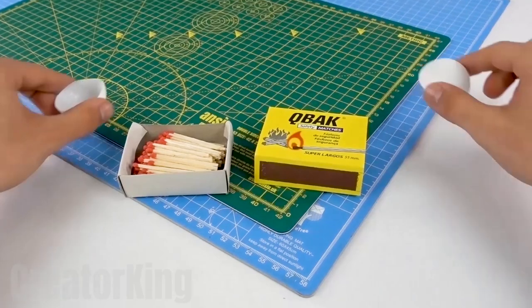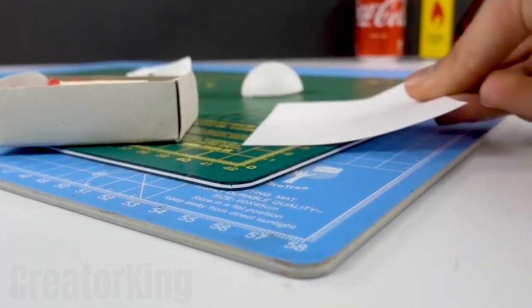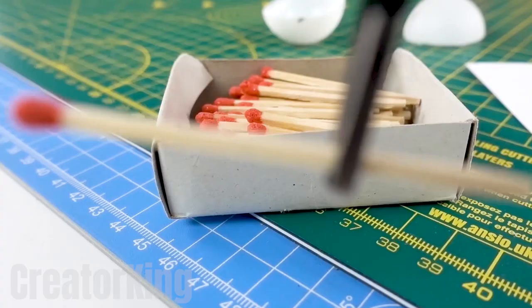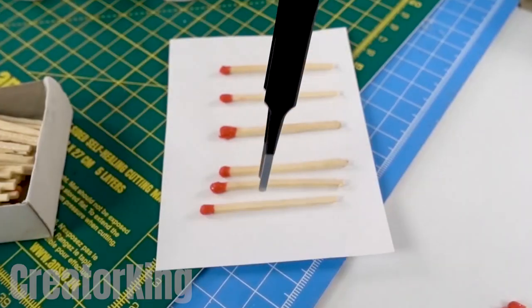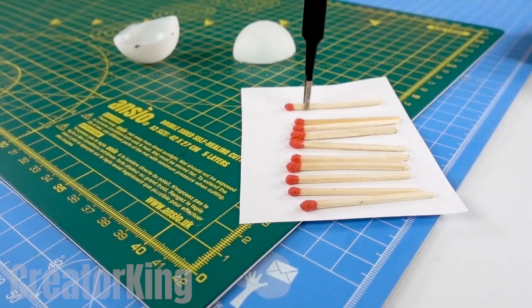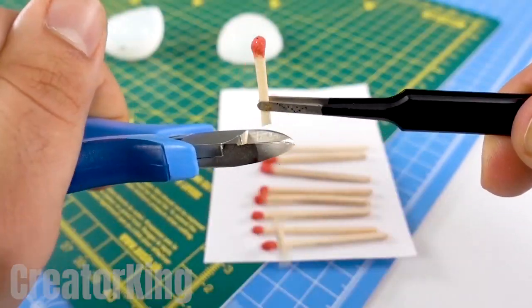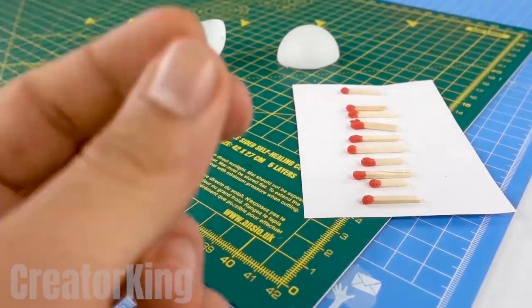Set aside both parts of the ball and the matchbox cover. Then take a few matches. This will be our first ingredient. And cut them in half with some tweezers or pliers. I think I'll make them a little shorter.